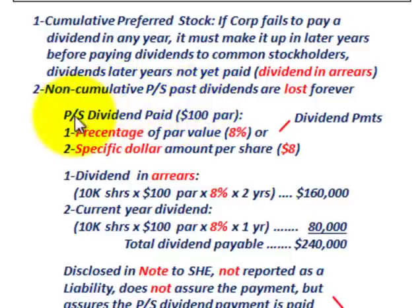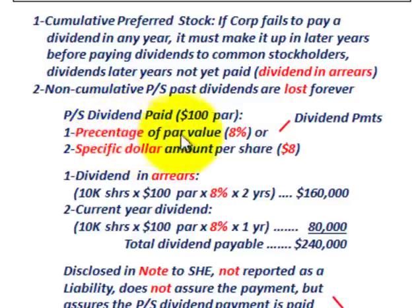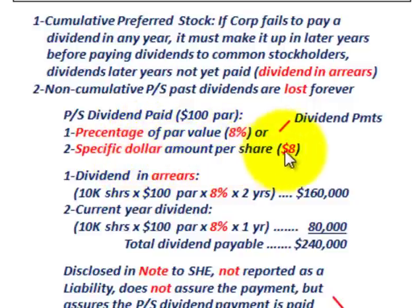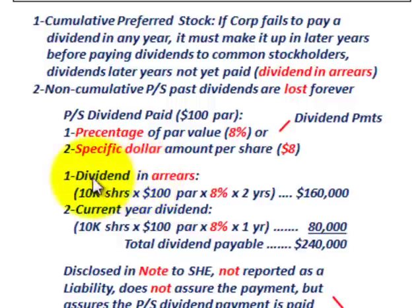For our example, preferred stock dividends are paid based on the par value. We have a $100 par value per share of preferred stock. Dividend payments can be stated either as a percentage of par value — in this case 8% — or as a specific dollar amount per share, which would equate to $8 per share. In our example, two years of dividends had not been paid on this cumulative preferred stock.